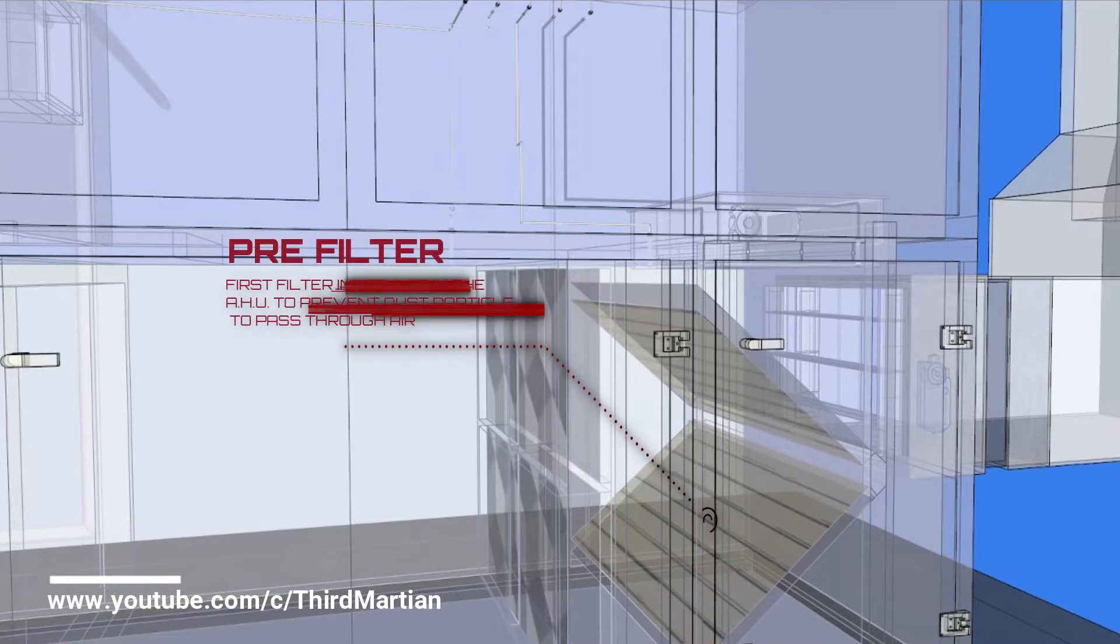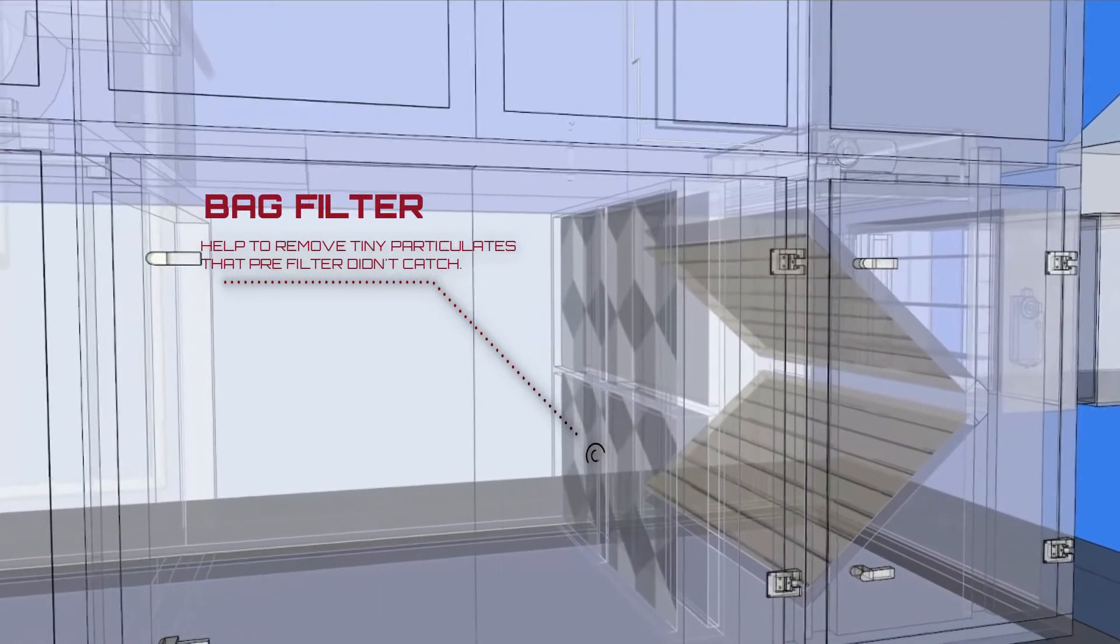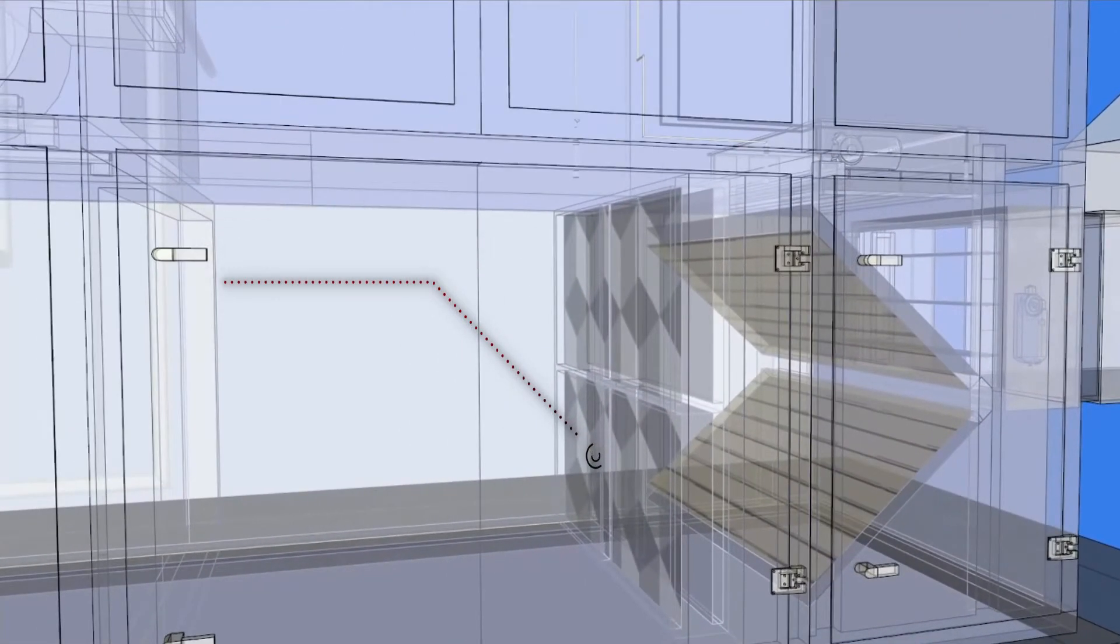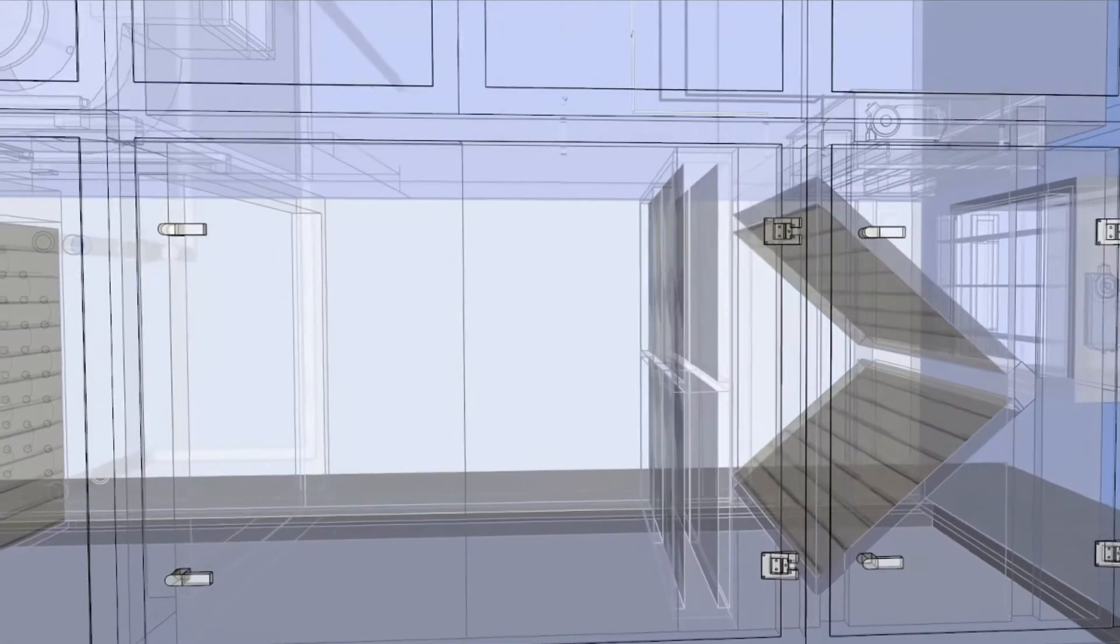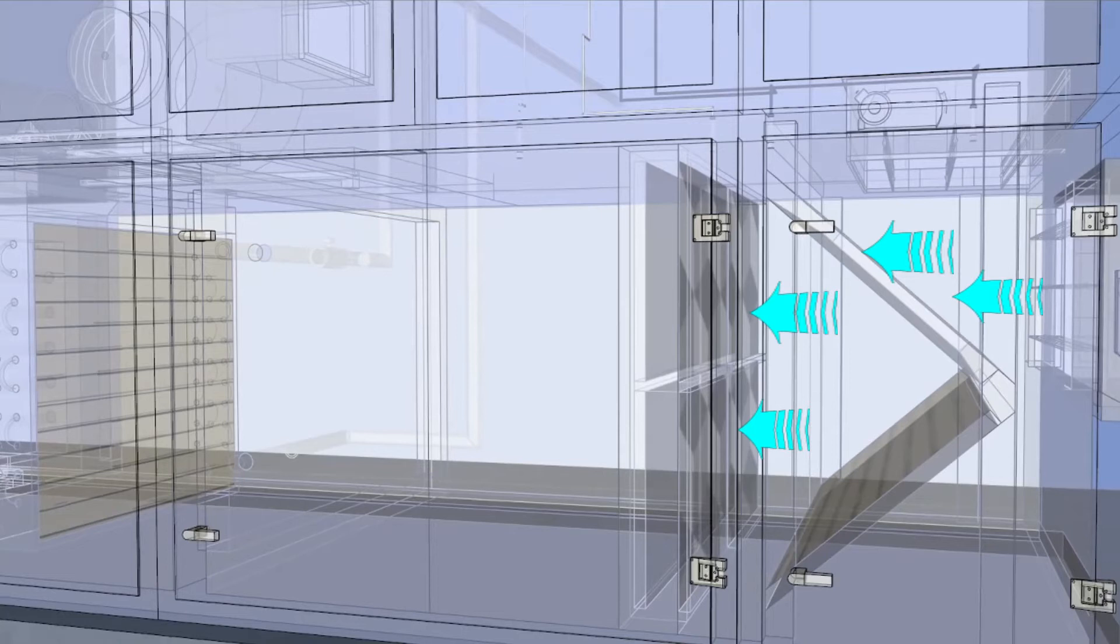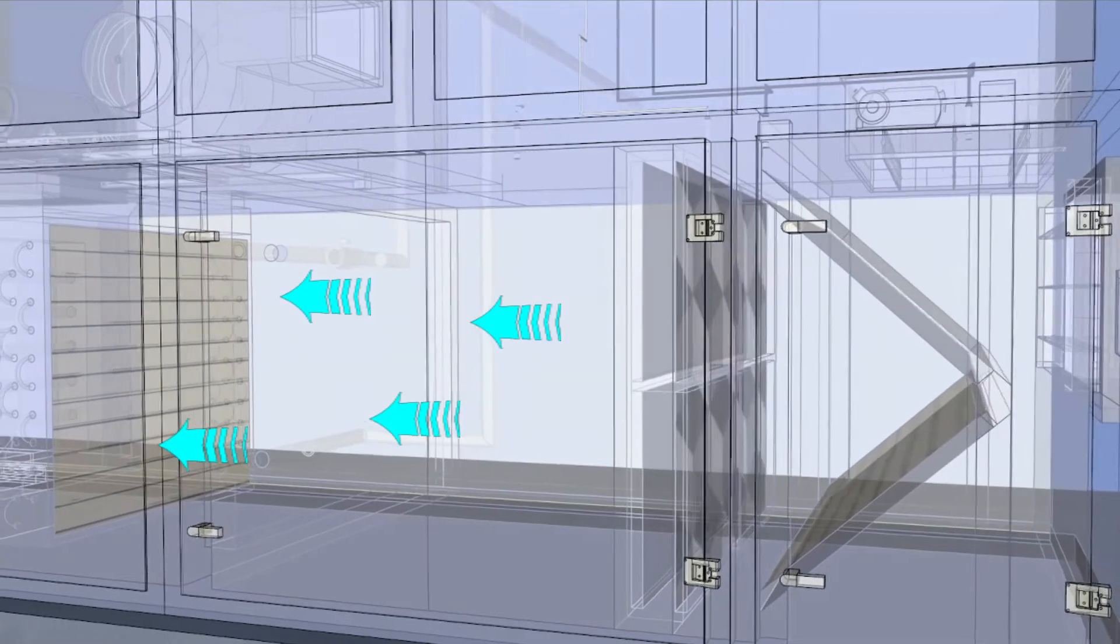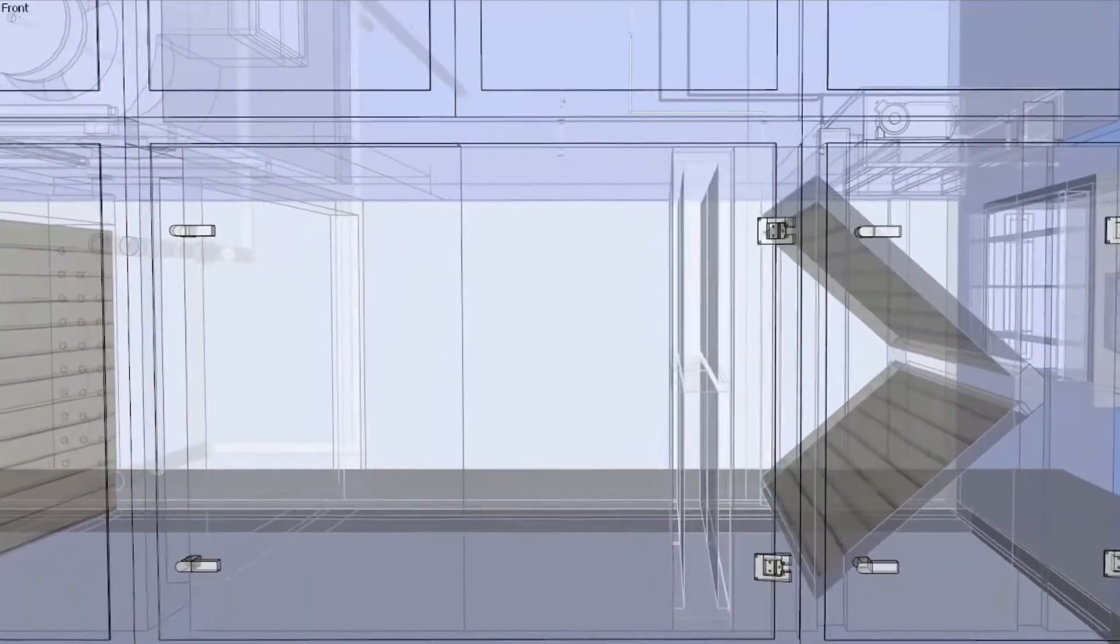Pre-filter is the first filter installed in the AHU to prevent dust particles from passing through air. The bag filters help to remove the finer particulates that the pre-filters didn't catch. They have a much larger surface area so that the airflow is not impeded as much as with other types. Some bag filters can have a charcoal lining for extra odor control and contaminant removal. They are used in conjunction with pre-filters which are usually a high-capacity pleated type.